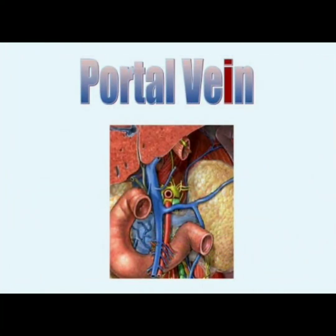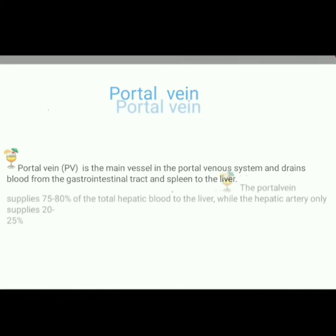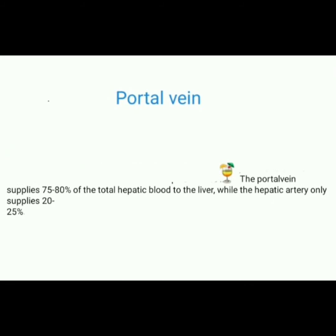Welcome to my new video. In this video we will learn anatomy of portal vein. Portal vein is the main vessel in the portal vein system and drains blood from the gastrointestinal tract and spleen to the liver. Portal vein supplies 75 to 80 percent of the total hepatic blood to the liver, while the hepatic artery only supplies 20 to 25 percent.